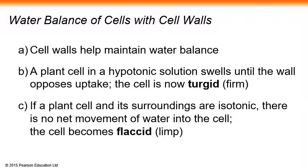Cell walls help maintain water balance. A plant cell in a hypotonic solution swells until the wall opposes further uptake — the wall presses back, preventing explosion. The cell is now turgid, pressured, and well-formed. If a plant cell and its surroundings are isotonic, there is no net movement of water into the cell.